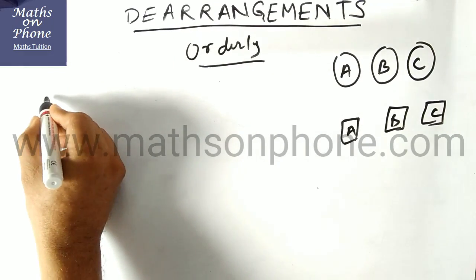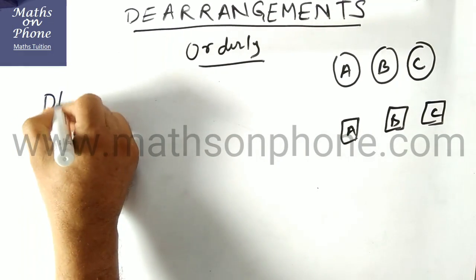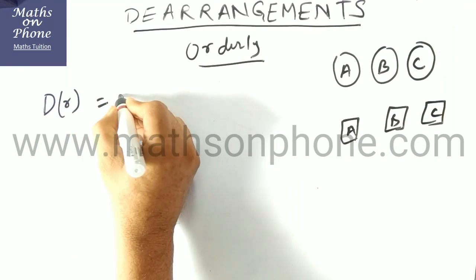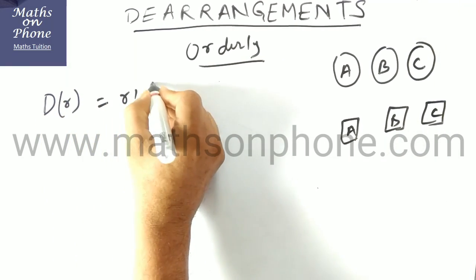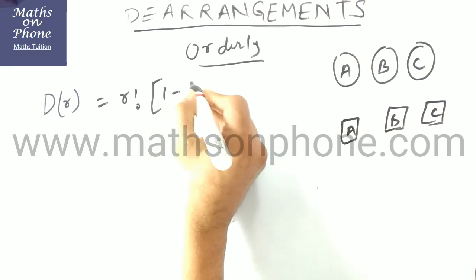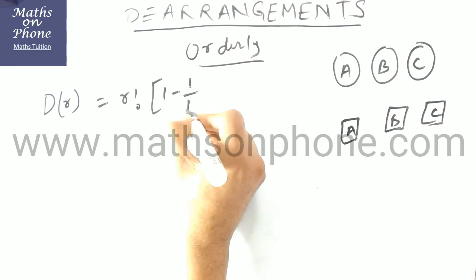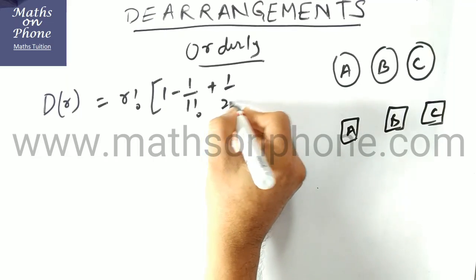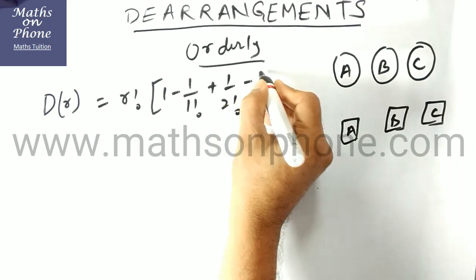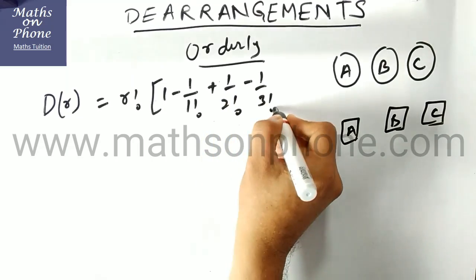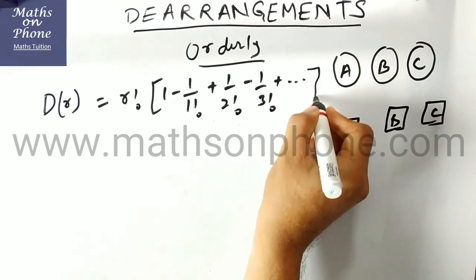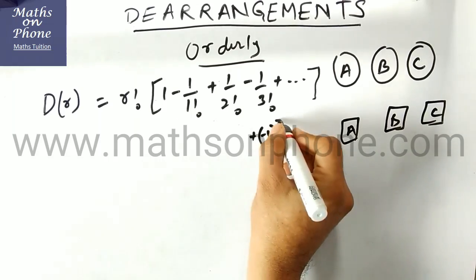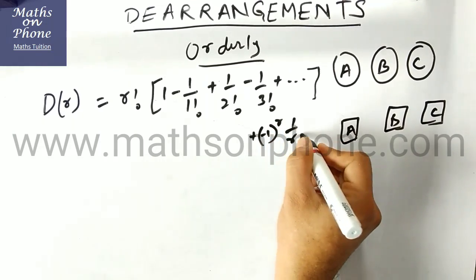So general formula of derangement I am writing here. Derangement of r things is factorial r times [1 minus 1 by 1 factorial plus 1 by 2 factorial minus 1 by 3 factorial] and the story goes on until minus 1 to the power r, 1 by r factorial.